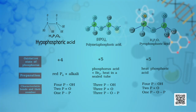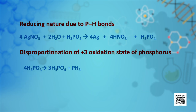Hypophosphoric acid, polymetaphosphoric acid, and pyrophosphoric acid have no P–H bond, so they cannot act as reducing agents. Hypophosphorous acid (H3PO2) is a good reducing agent because it contains 2 P–H bonds and reduces, for example, silver nitrate to metallic silver. Acids in the +3 oxidation state of phosphorus tend to disproportionate to higher and lower oxidation states. That is why orthophosphorous acid on heating gives orthophosphoric acid (oxidation state of phosphorus: +5) and phosphine (oxidation state of phosphorus: −3).